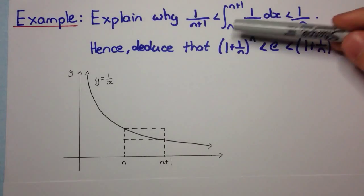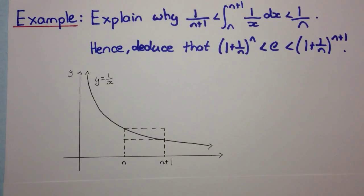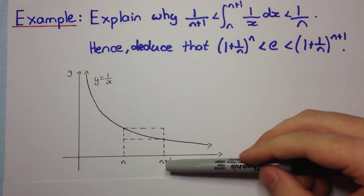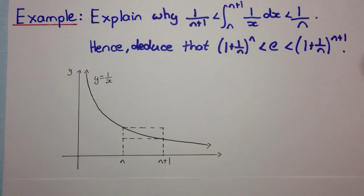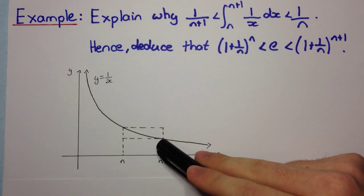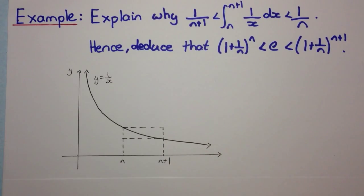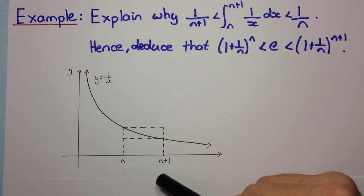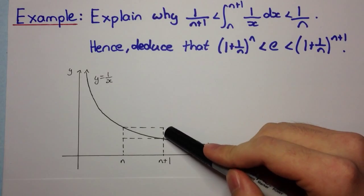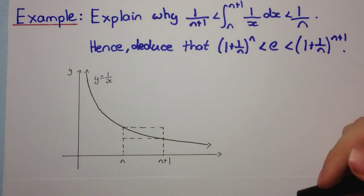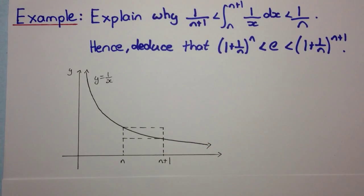Now we want to find lower and upper bounds. If we consider these two rectangles — which are actually known as Riemann sums, though that's part of university work, so you don't need to worry about that for now — we're estimating the value of the area. One rectangle underestimates and the other overestimates, so from that we can get an upper bound and a lower bound.